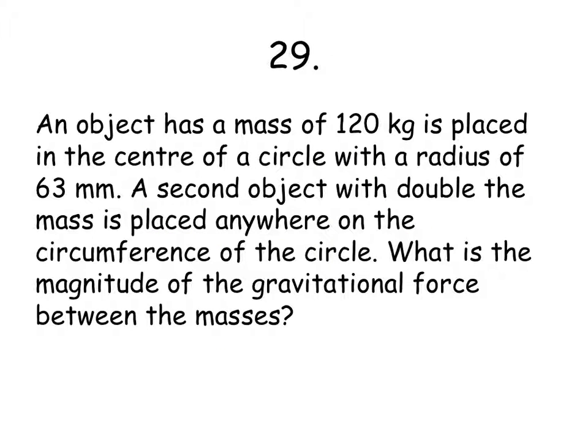An object has a mass of 120 kilograms, and it's placed in the center of a circle with a radius of 63 millimeters. A second object with double the mass, in other words, 240 kilograms, is placed anywhere on the circumference of that circle. So, anywhere 63 millimeters away from the center of the circle. What is the magnitude of the gravitational forces between these masses?